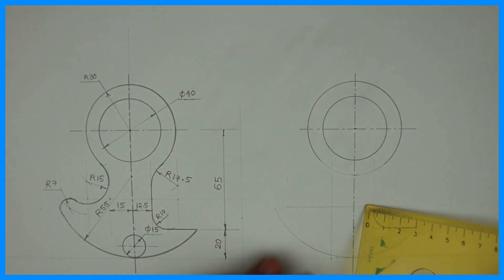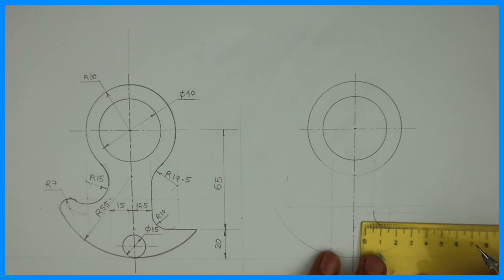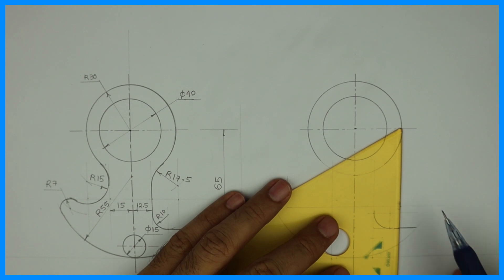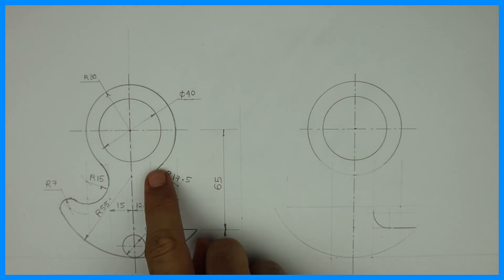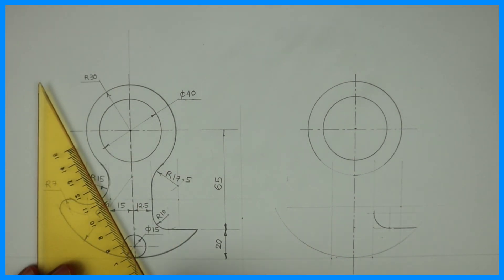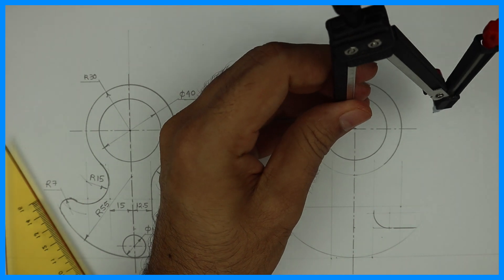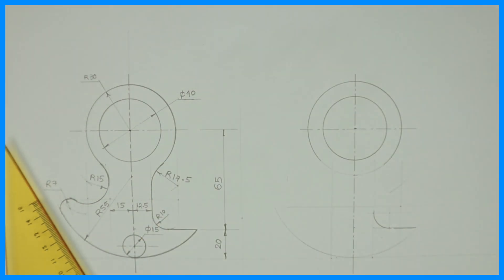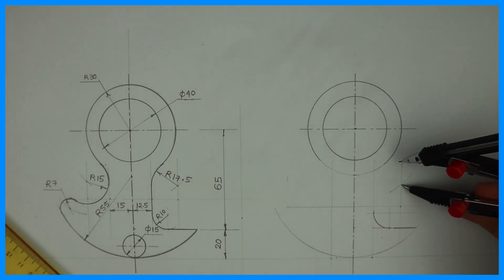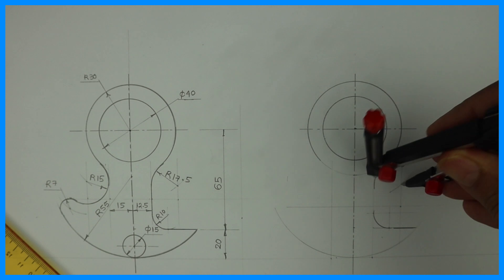Then this 17.5. So for that from this 12.5 line you go 17.5. You take 17.5 on the right hand side and you draw a parallel line, that means vertical line. And from the center, from where you have taken 30, from there you take 30 plus 17.5. So it is 47.5. Since it is external, we need to add. So from this circle we cut 47.5. And from 12.5 we take 17.5 parallel line. Wherever it will cut, from that point we can draw radius 17.5.